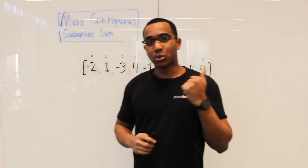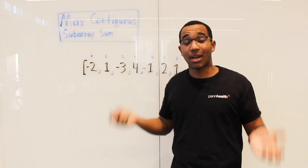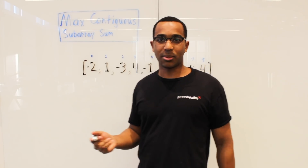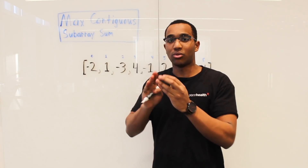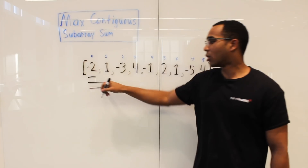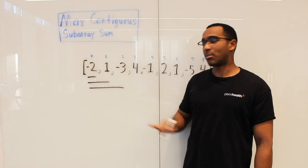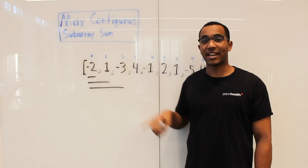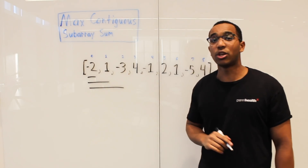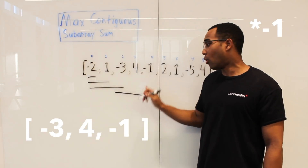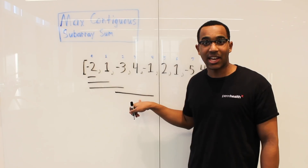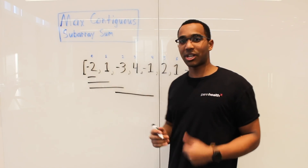First, I want to address: what is a subarray? What is contiguous? Contiguous means we do not have a break in a snippet that we take from the array. So negative 2 and 1 is a contiguous subarray. Negative 2, 1, and 3 is a contiguous subarray. Negative 3, 4, and 1 is a contiguous subarray. Do you see how this line does not break? That is what contiguous means.